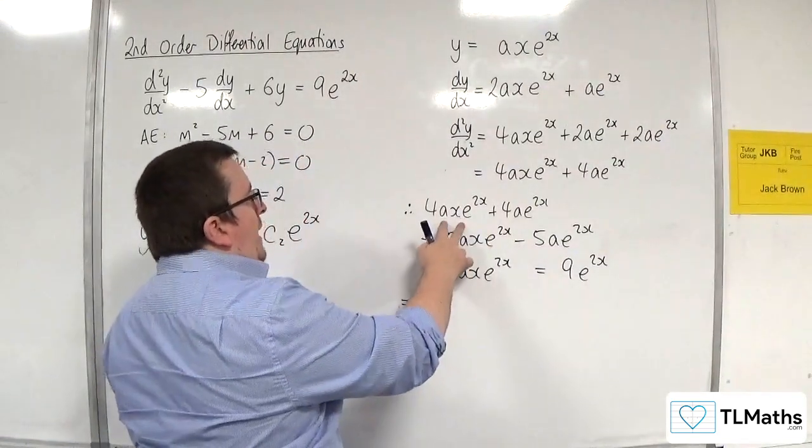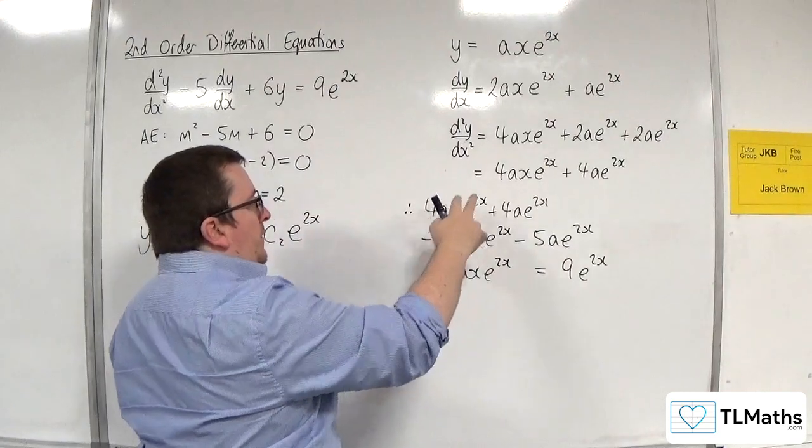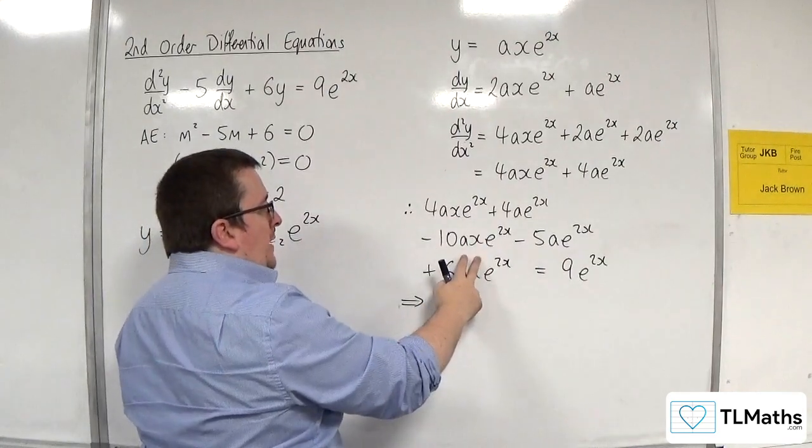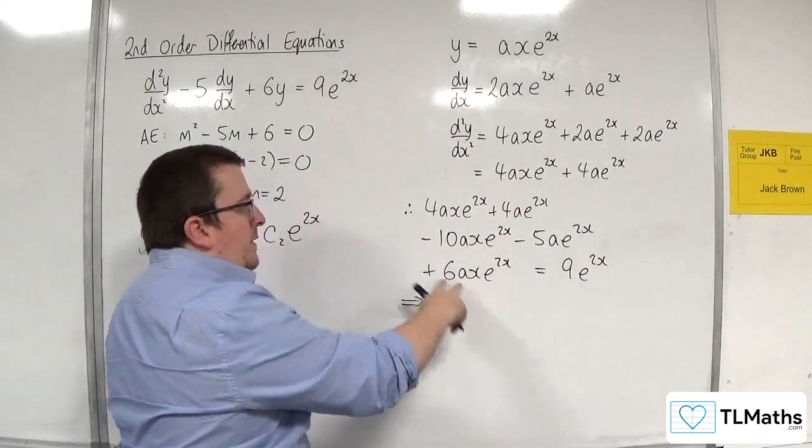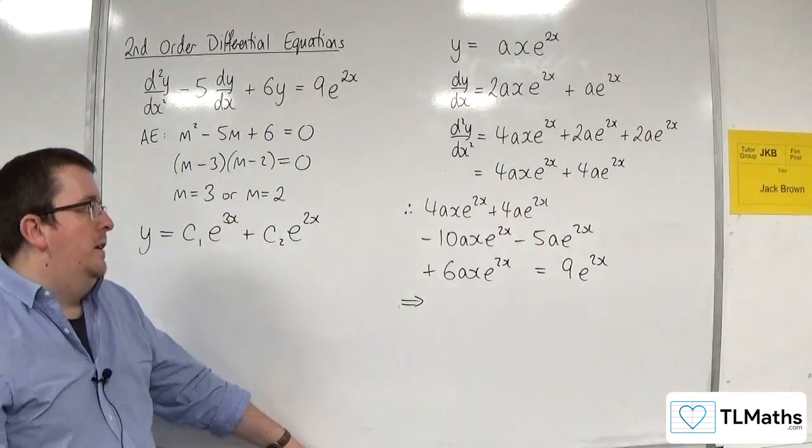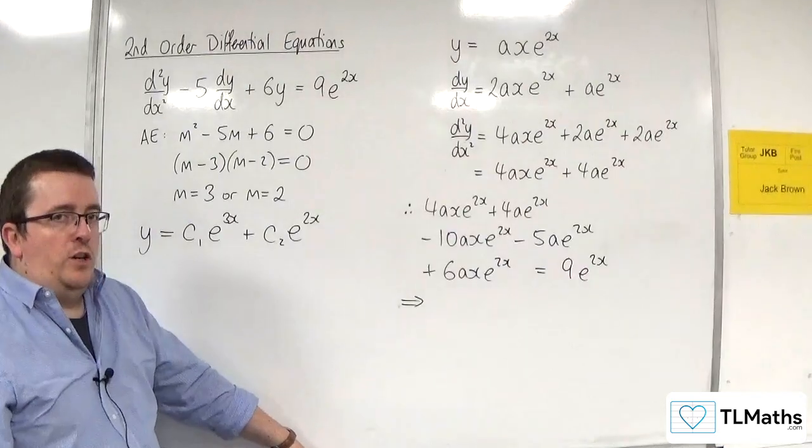So we've got 4axe to the 2x take away 10axe to the 2x plus 6axe to the 2x, and they're gone. So they all knock each other out.